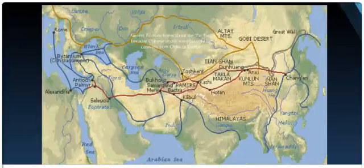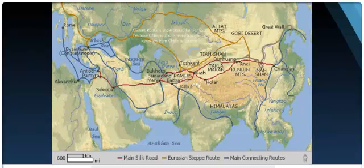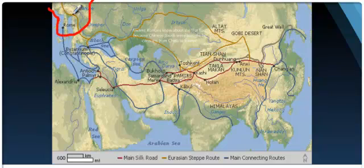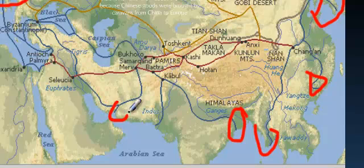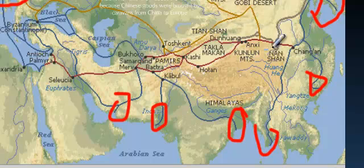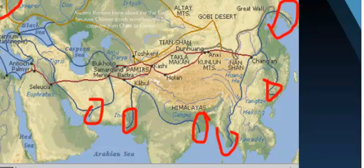Had the average Roman citizen ever seen China? No. Here is Rome, way over here. Things were traded with them from the far stretches of the globe — supplies, gold, incense, fabrics, and dyes were brought all the way to Europe. Europeans didn't go to Asia themselves, but there were traders and merchants who would go back and forth so that ideas were exchanged over huge distances.